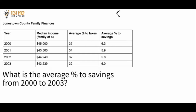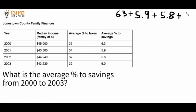Knowing how to get the average is really important — it's one of the most important skills for the GED test. Another way to say the average is the mean. Mean, median, mode, and range questions can show up on science, social studies, and math. To find the average, you take all of the numbers in your data set, add them up, and divide by the number of numbers in that data set.